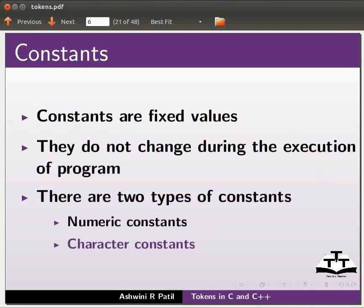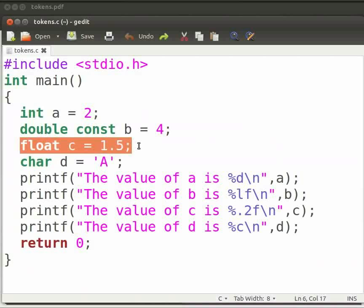Now, come back to our program. Here, float is a data type of variable C. We have assigned a data value of 1.5. Data type is a finite set of values along with a set of rules.